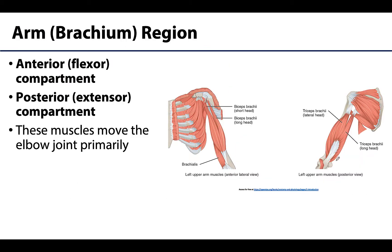Moving distally from the shoulder into the arm — or scientifically referred to as the brachium region — we often use the term arm to mean the whole upper limb, however that is not correct; the arm is this specific area where the humerus is located. There are two major compartments here, and very fortunately there is a similar organization in the forearm as well. The anterior compartments, as their name would suggest, are anteriorly located and are often referred to as flexor compartments, as these muscles will play a role in flexion of — in this particular case — the elbow joint.